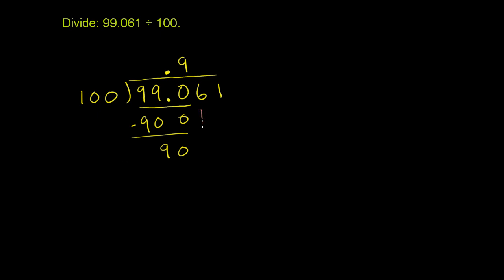Now we can bring down this 6. 100 goes into 906 nine times. 9 times 100 is 900. And then we can subtract. 906 minus 900 is going to be 6.